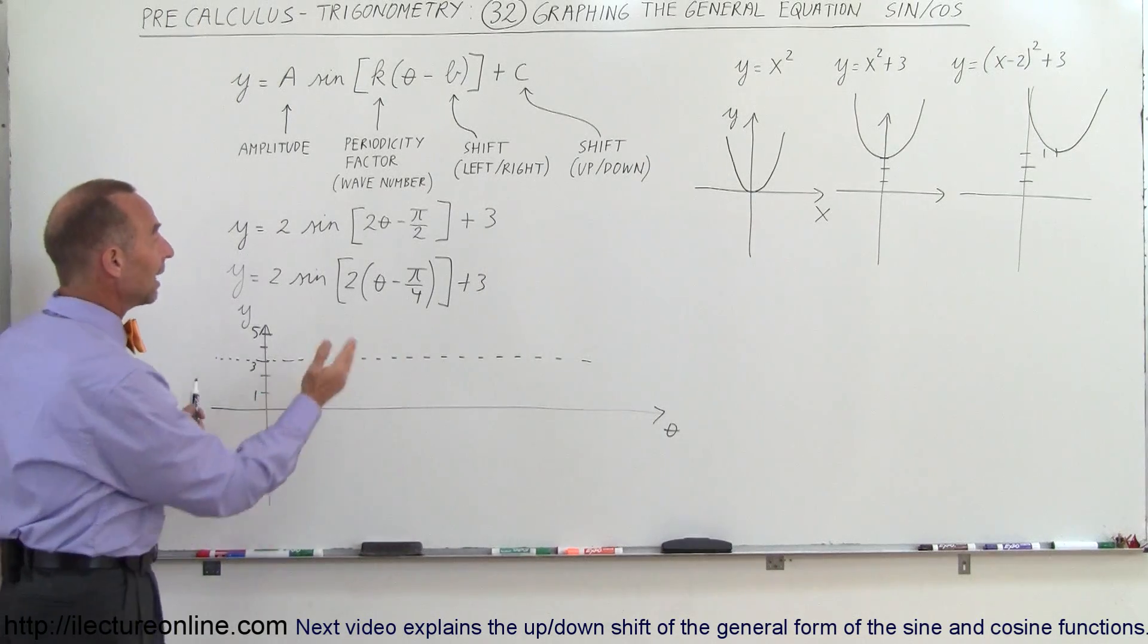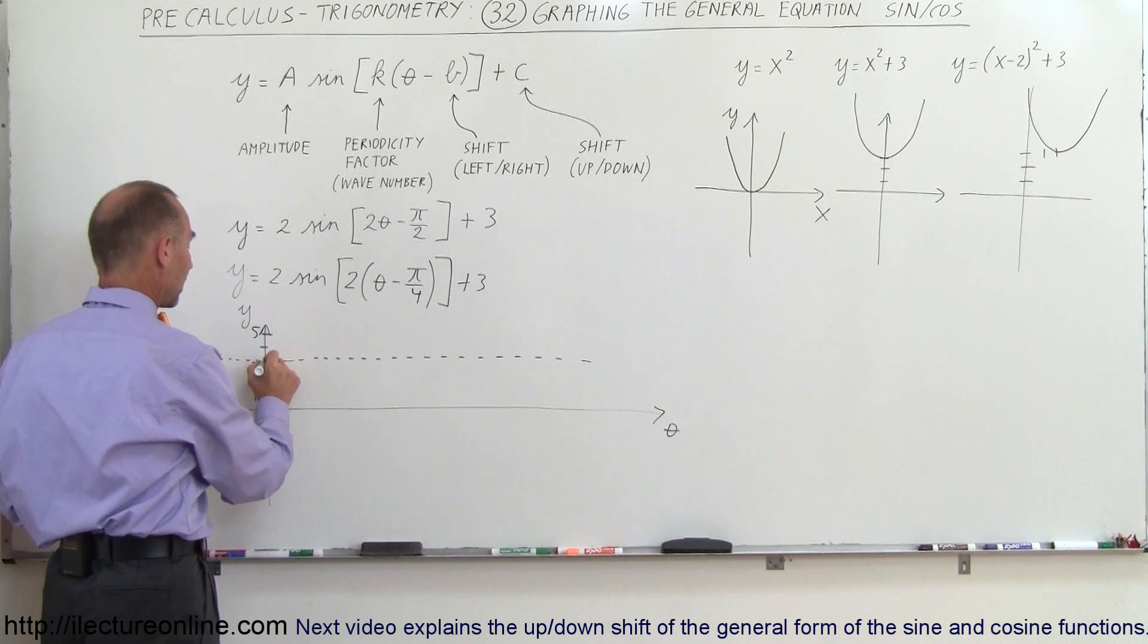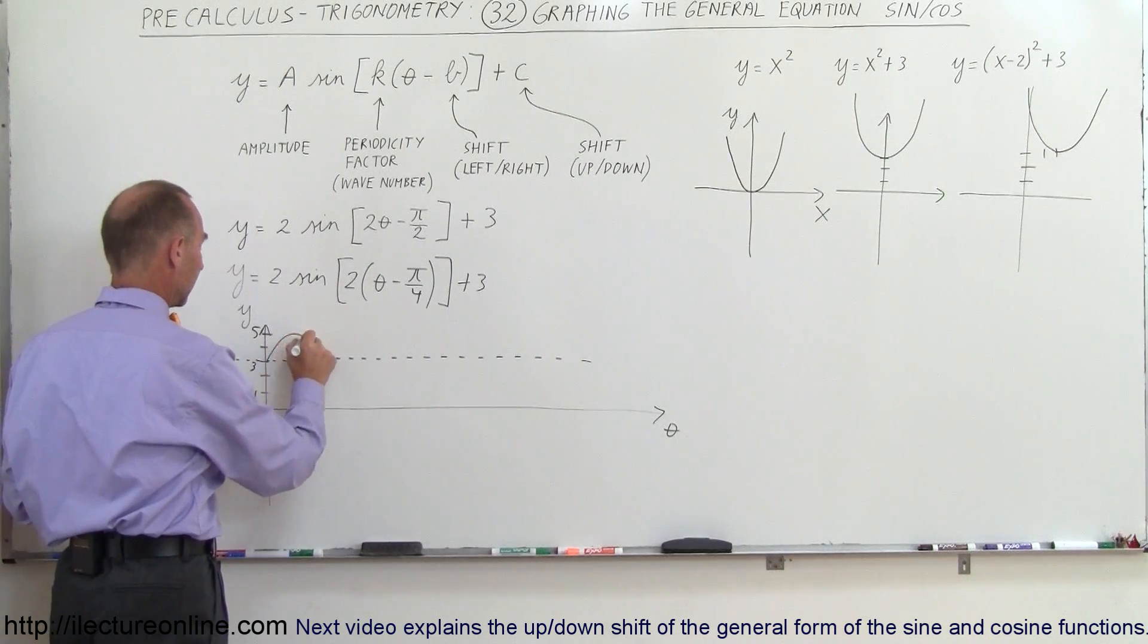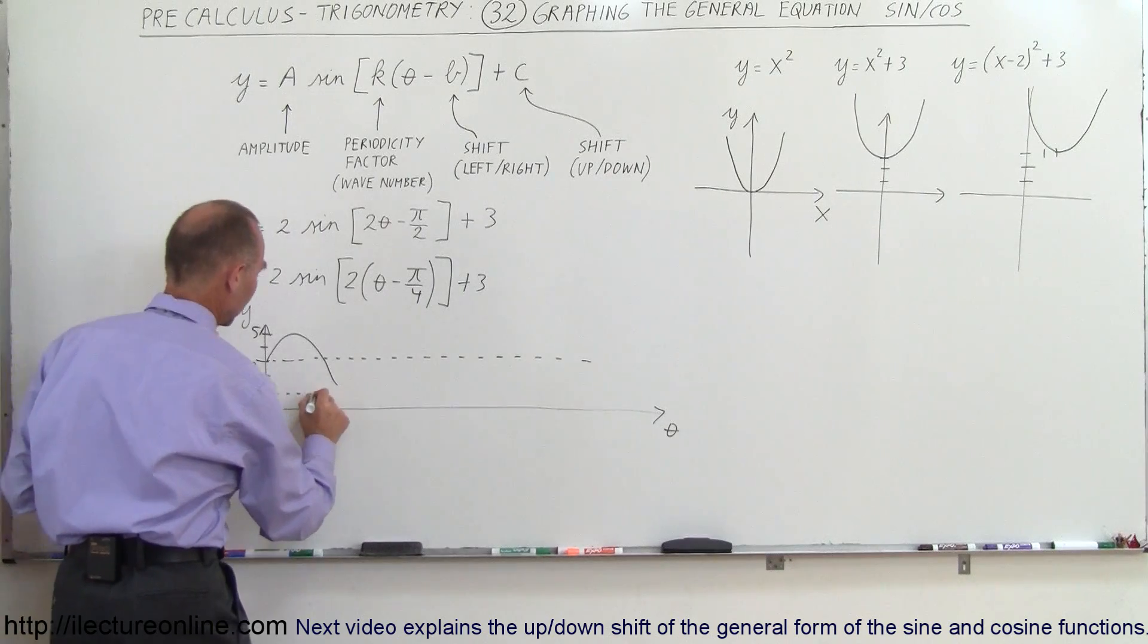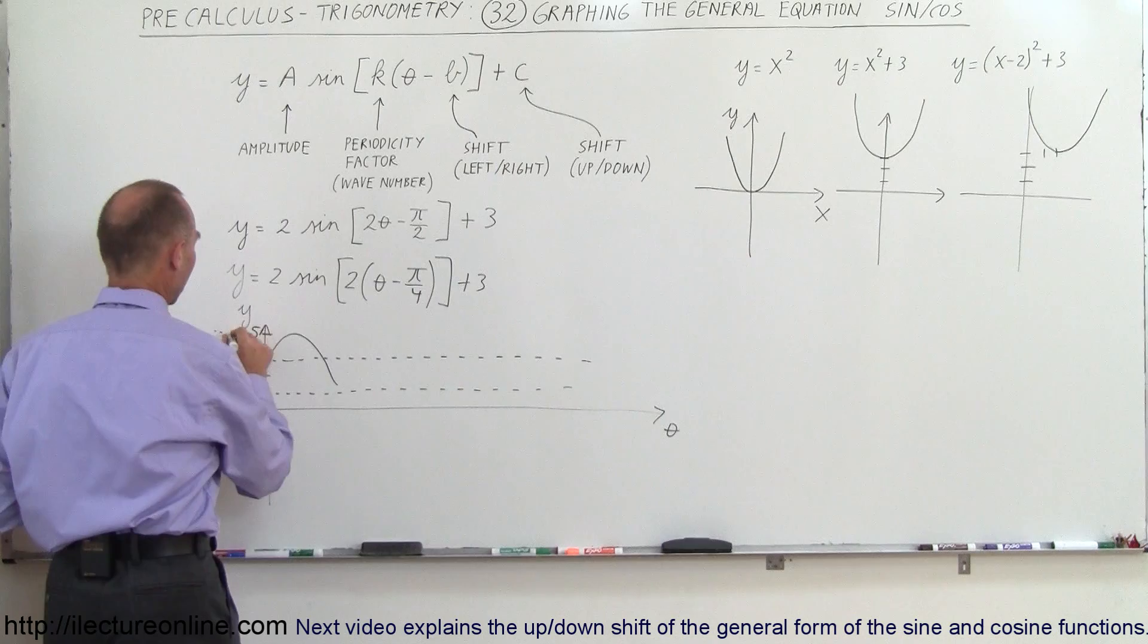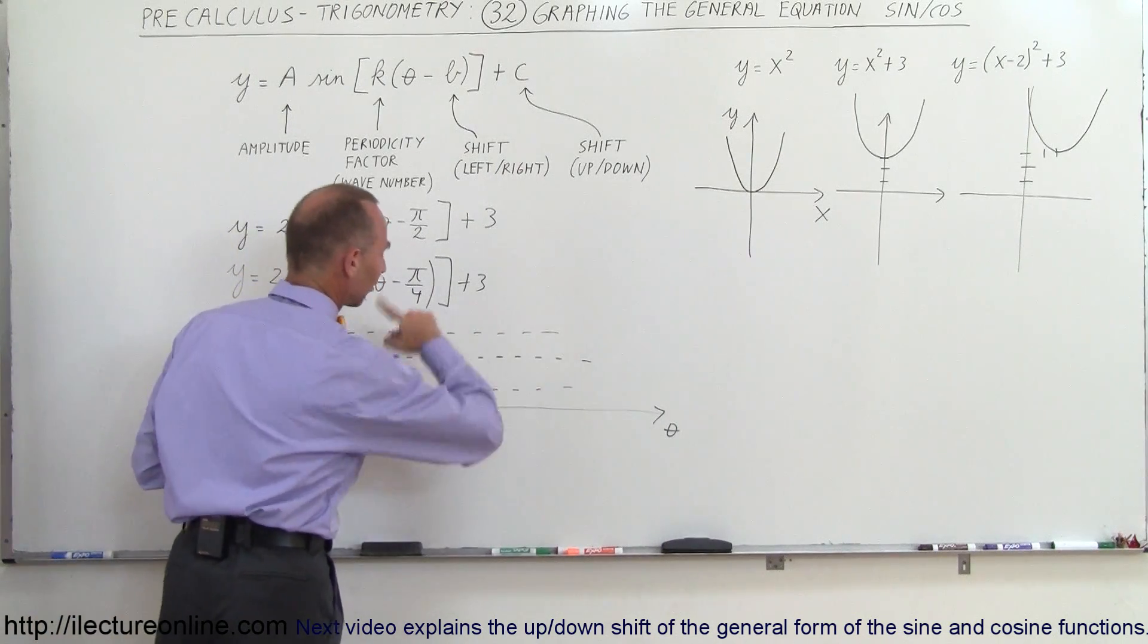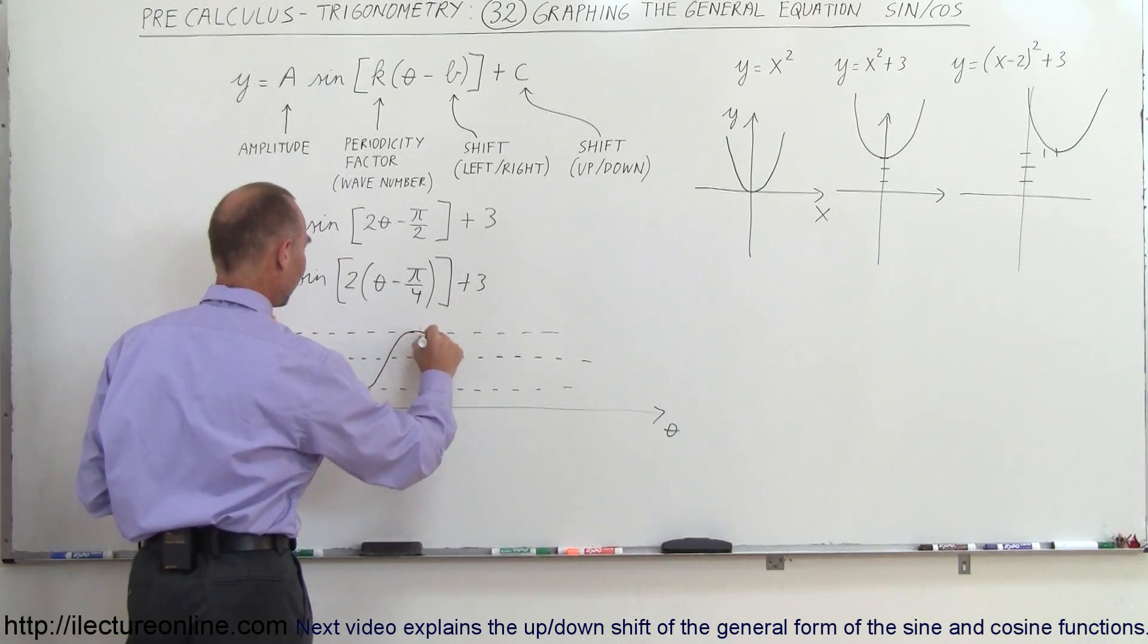Now normally if we didn't have a shift left right, of course sine function would start over here and go up and down and maybe it's not a bad idea to grab the, to put a little dotted line at the bottom of where the function is going to be and the dotted line at the top where the function is going to be. So you know that you're going to oscillate between those two lines. So it makes a little bit easier to graph.